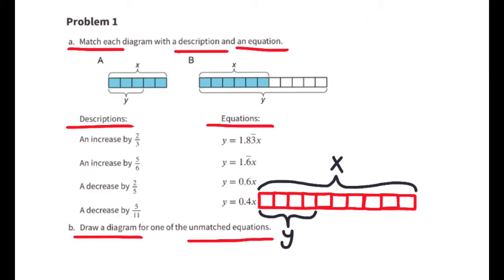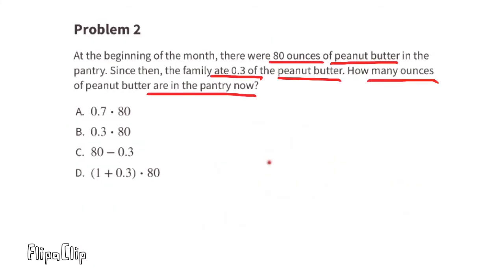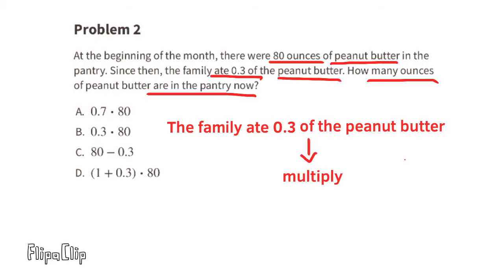Problem number two: At the beginning of the month, there were 80 ounces of peanut butter in the pantry. Since then, the family ate three-tenths of the peanut butter. How many ounces of peanut butter are in the pantry now? In math, "of" means multiply. The family ate three-tenths of the peanut butter, so we need to multiply three-tenths times the number of ounces that we started with. Three-tenths times 80 would tell us how much peanut butter the family ate.